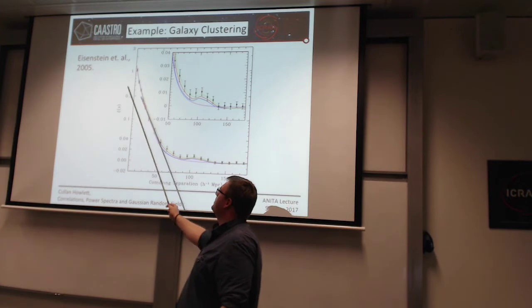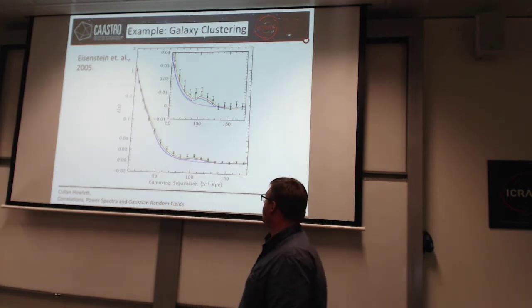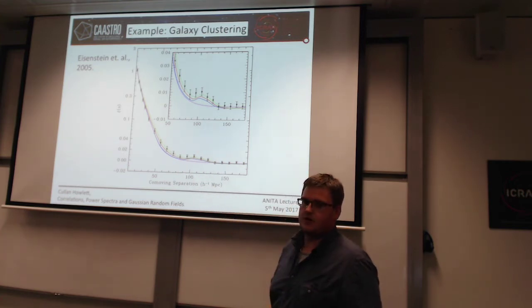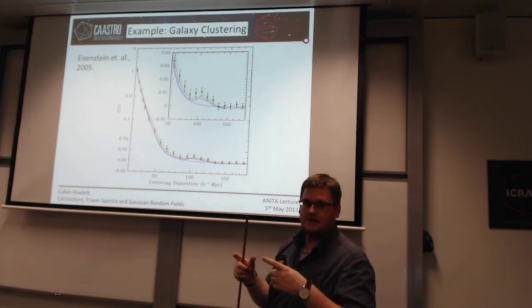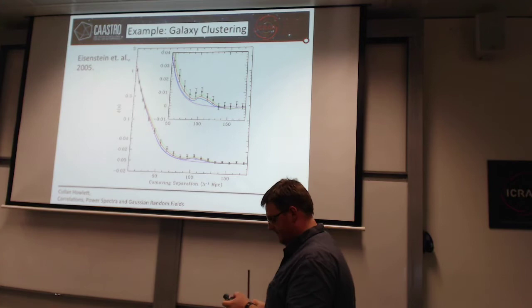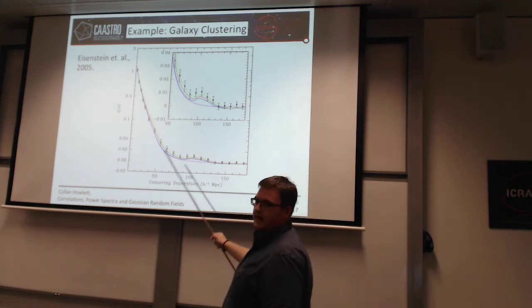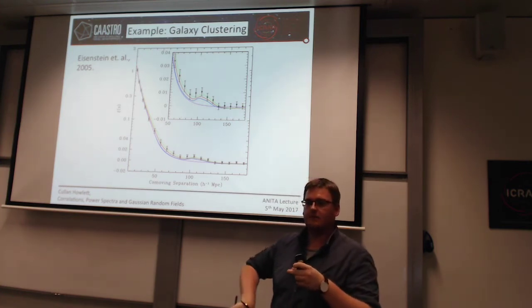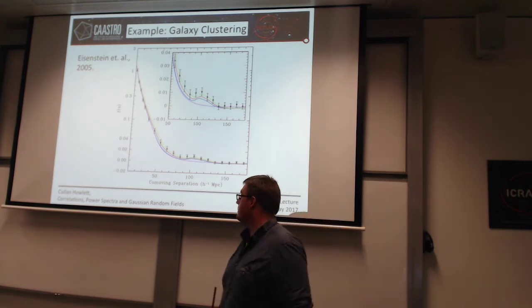That's why you get an excess in the correlation function on small scales. And this feature here is the baryon acoustic oscillation: in galaxy clustering you have an excess of galaxies separated by about 150 megaparsecs, because of the way those galaxies form in the universe. You can get something similar for spiral galaxies — an excess feature on the spiral arms, where the typical distance of a spiral arm from the center would give an excess of star-forming regions.